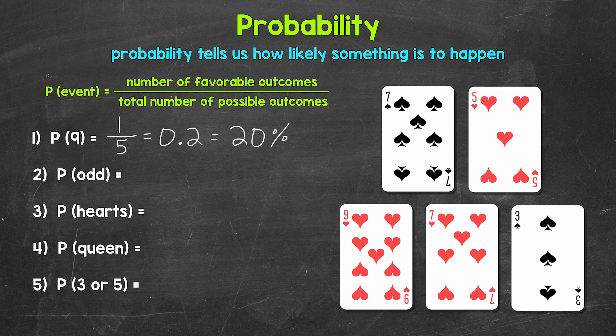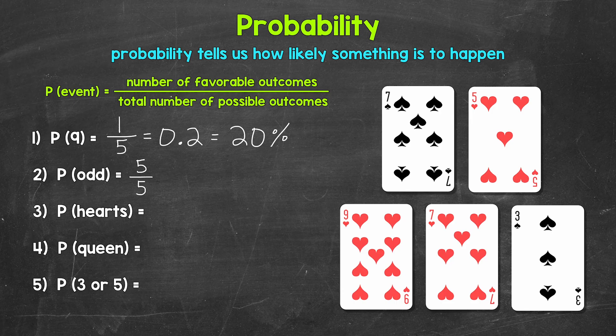Let's move on to number two: what's the probability of picking an odd number? Let's start with the number of favorable outcomes — how many cards have an odd number? We have a seven, a five, a nine, a seven, and a three. So all five cards. We have five favorable outcomes, so five is our numerator. Then our total number of possible outcomes is five as well — there are five total cards. So our denominator is five, and our fraction is five over five, five fifths. We have a five out of five chance of picking an odd number.